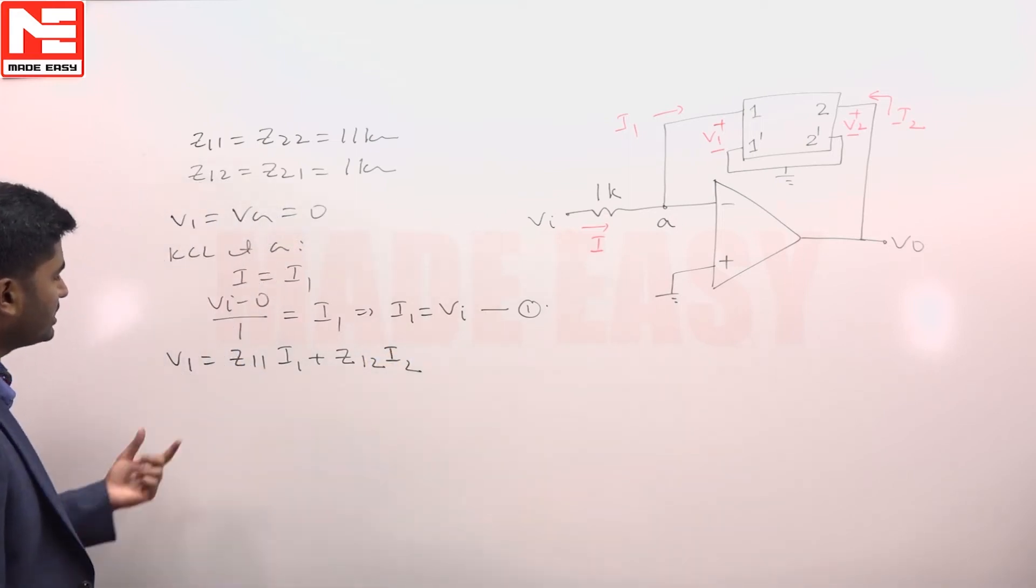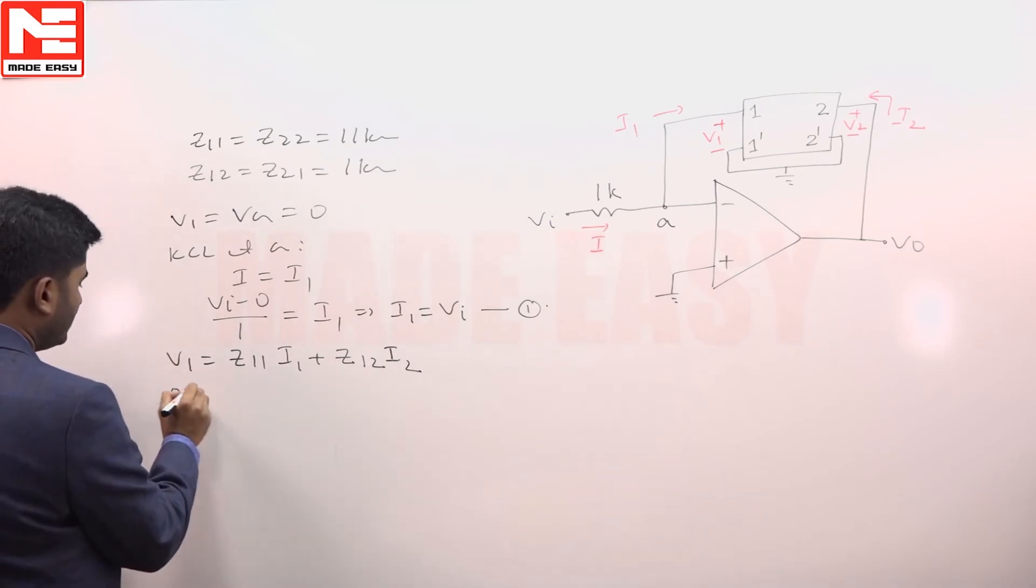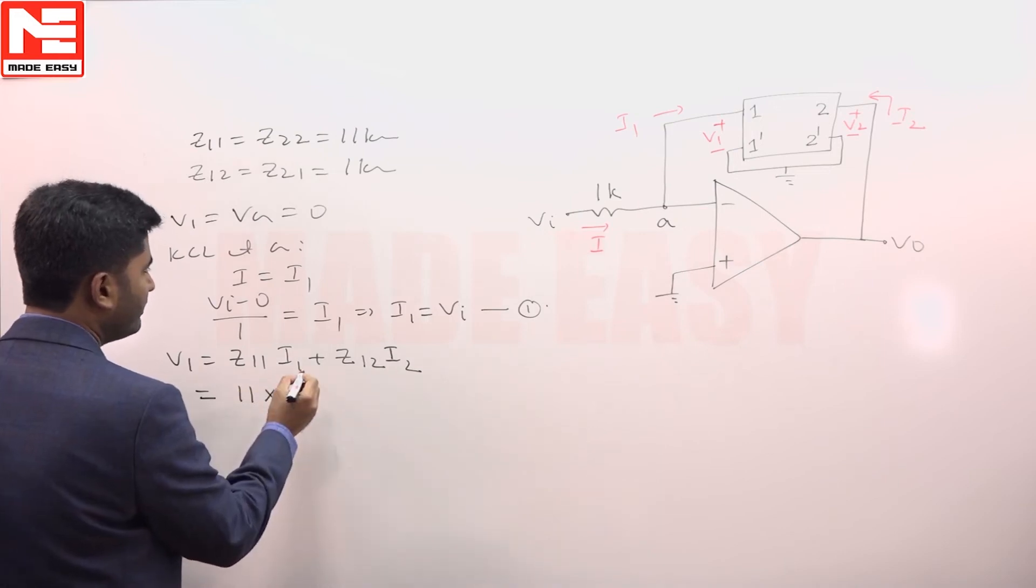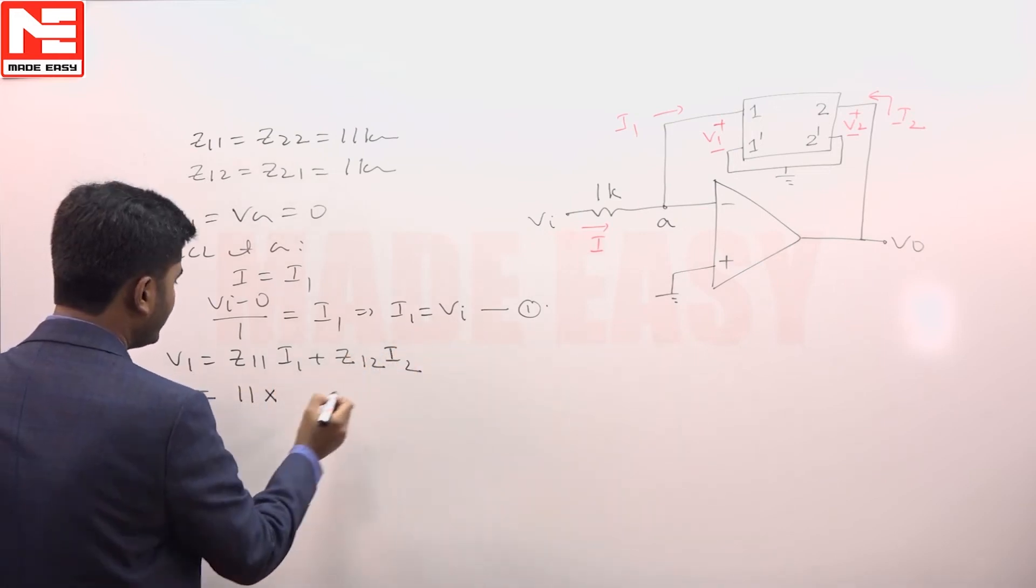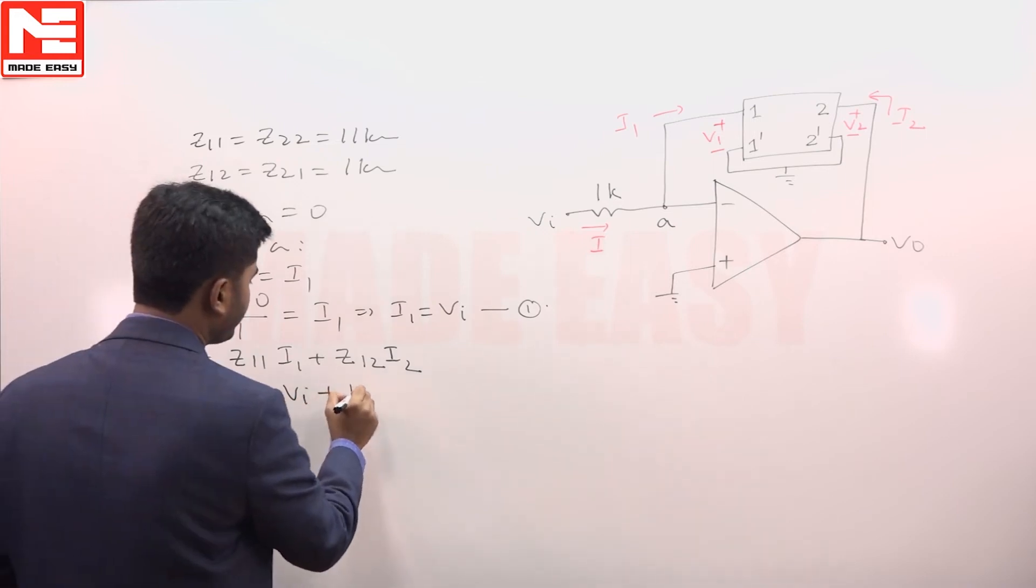Then you substitute here the known data. V 1 is 0, z 1 1 is given as 11 k into i1. i1 is V i from equation number 1, plus z 1 2 is 1 k into i2.